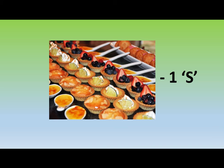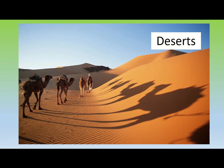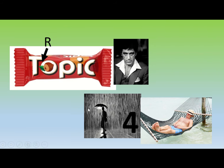This is a nice easy one — hopefully you spotted these are 'desserts', and if you take one of the S's away you get deserts, another large-scale ecosystem. Deserts are characterised by largely lifeless dune areas, though they can take a number of forms. This image shows the most well-known type, with camels trailing through.